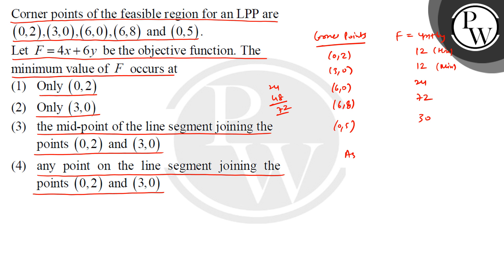So minimum value of F occurs at (0,2) and (3,0). Therefore, F will have minimum value 12 at all points on the line segment joining these two points, on the line segment joining these two points.